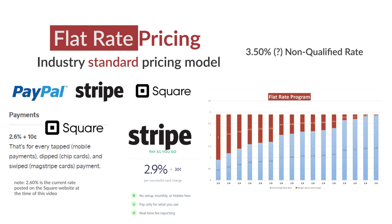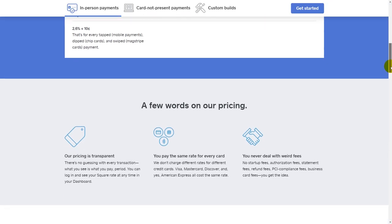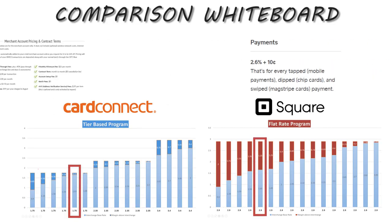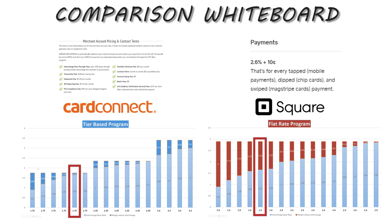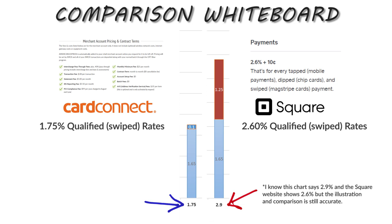Flat rate pricing is offered by both merchant account providers and payment service aggregators like PayPal, Stripe, and Square. For example, Square at the time of this video advertises 2.6% plus 10 cents per transaction for tapped, dipped, or swiped transactions. Comparing Square to a merchant account option, Square's rate for card-present transactions is 2.6%.